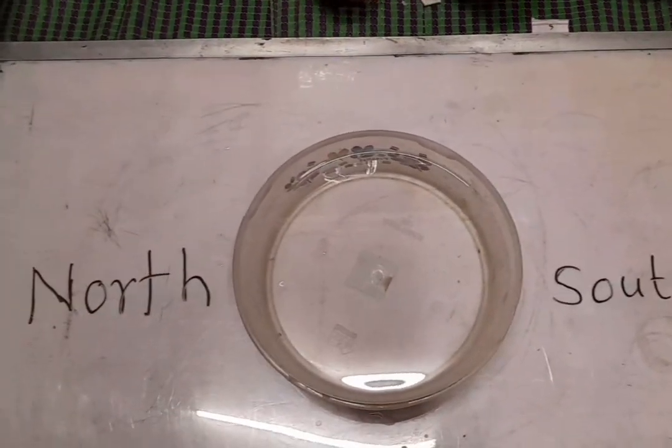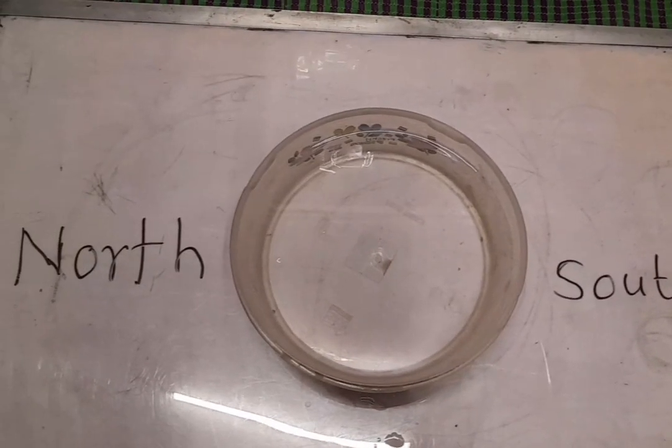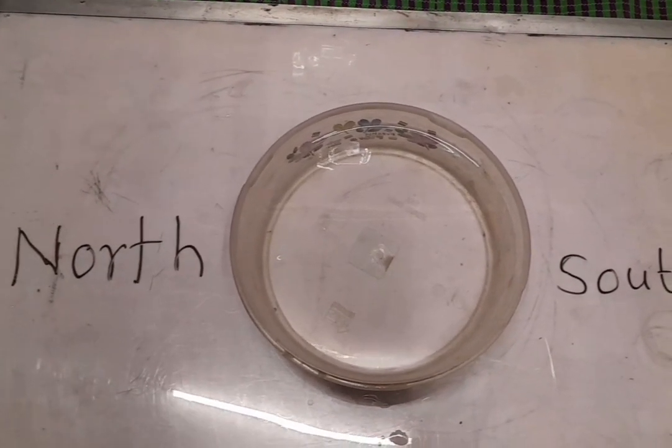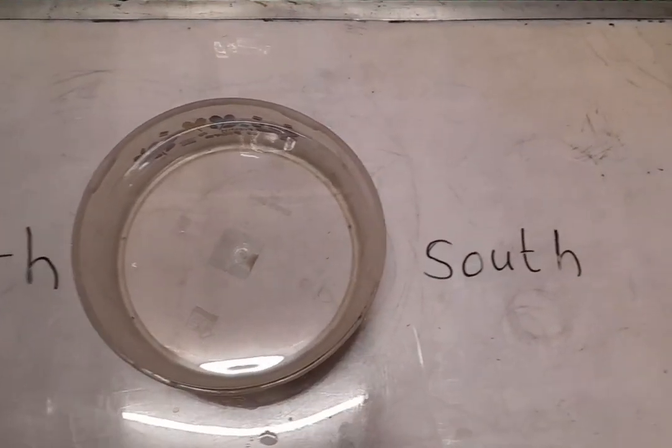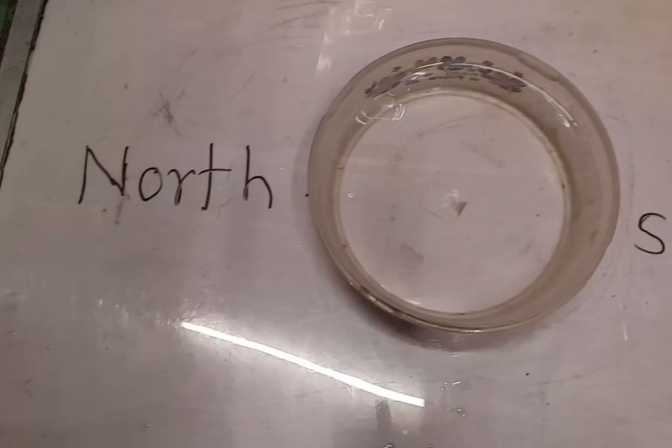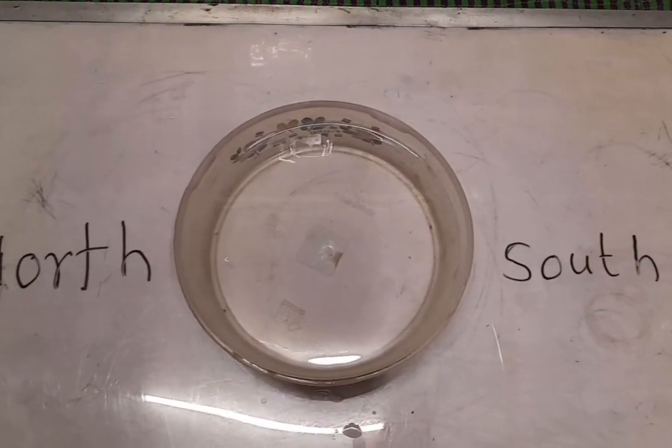For proving Earth is a gigantic magnet, we are having one experimental setup here. Here we are having one tub filled with water and on the whiteboard, we shown south and north direction. This is the actual south and north direction of the Earth.